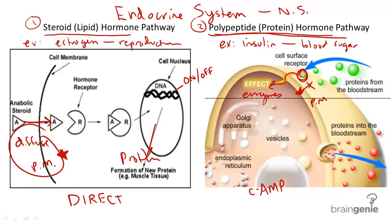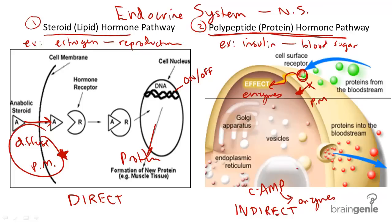Cyclic AMP then activates enzymes inside the cell, producing a desired response. Think of protein hormones as larger, and therefore less capable of directly entering cells, needing some extra assistance when it comes to generating a cellular response.